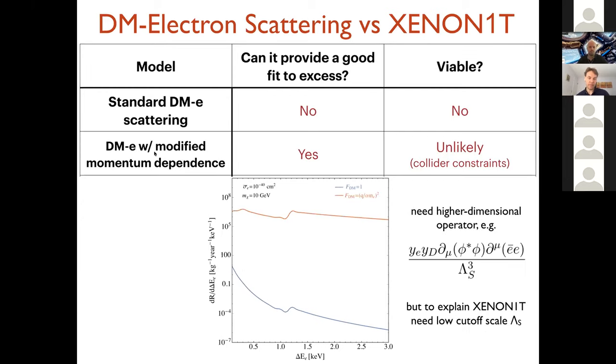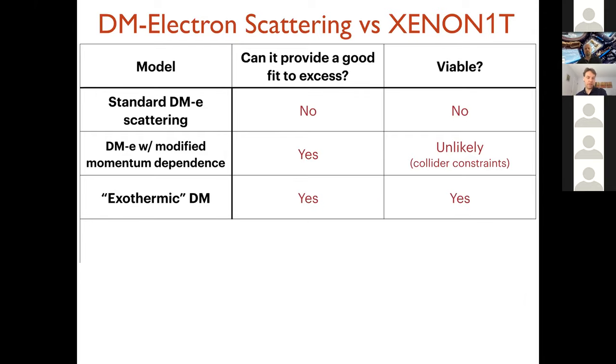You can try to modify this with some momentum dependence. You can imagine that dark matter has some crazier coupling with electrons through some high-dimensional operator. That can produce a momentum-dependent interaction. But the problem here is that the couplings that you need, or in particular the scale of this operator, is so small that collider searches would have found those particles that generate this operator. So this is also not a great explanation.